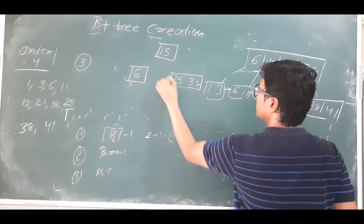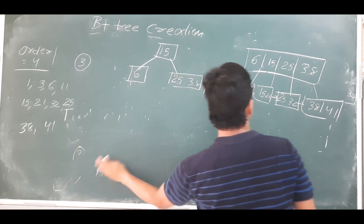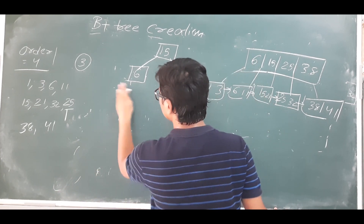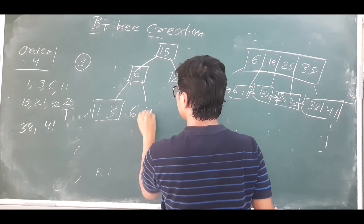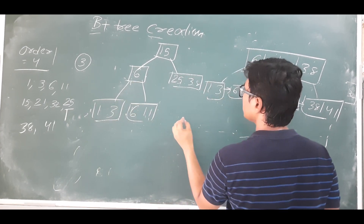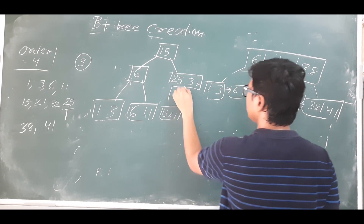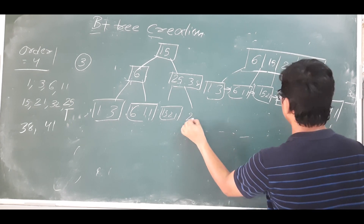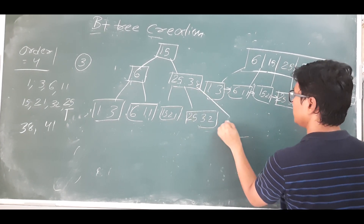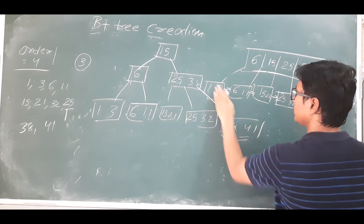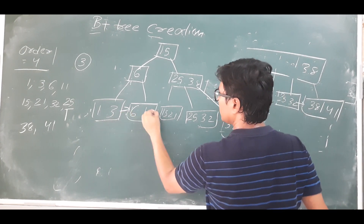The remaining elements come into the right subtree. So you will have 1 and 3, then 6 and 11, then 15 and 21, then to the left of 25 and to the right of 25 you have 25 and 32, and to the right of 38 you have 38 and 41. All the leaf nodes are connected.